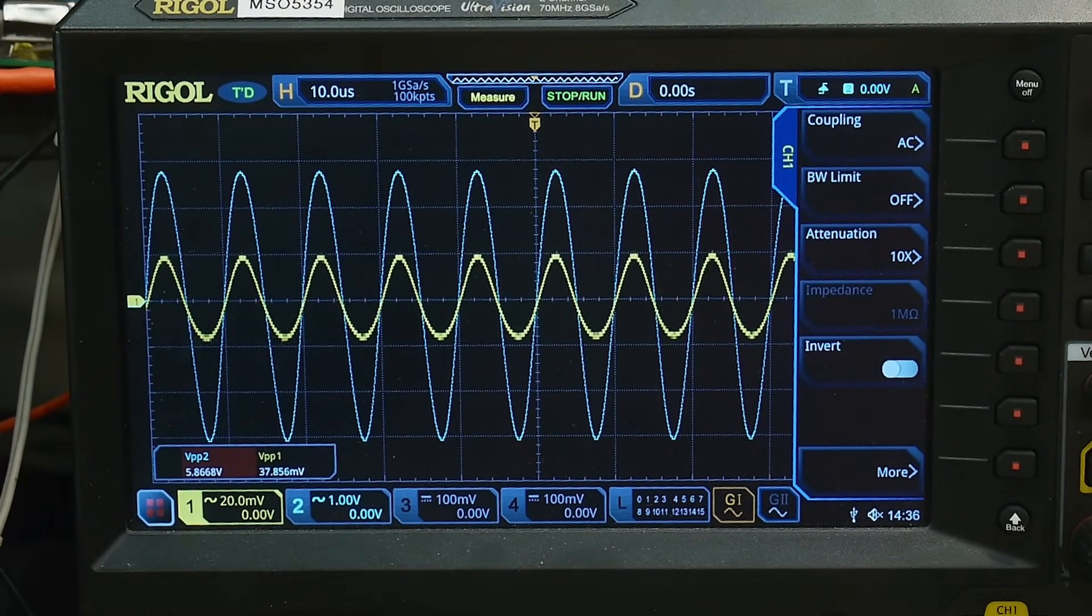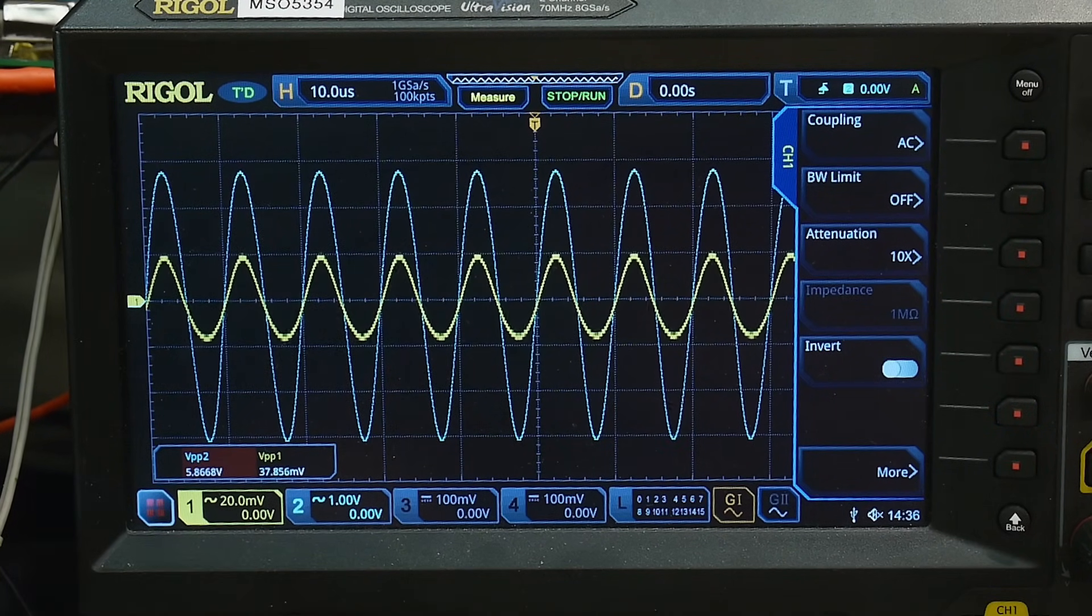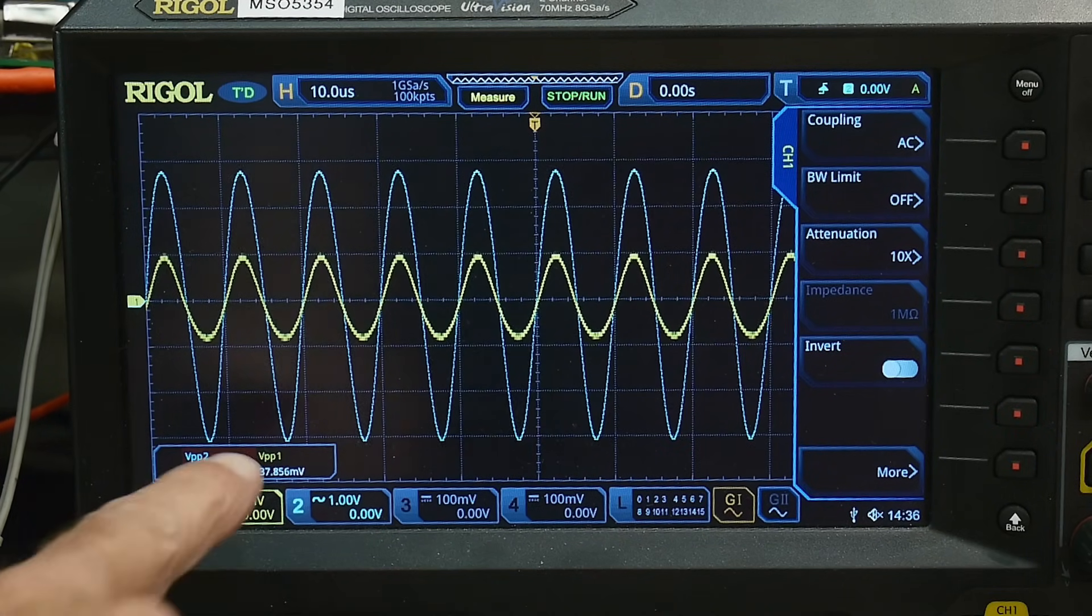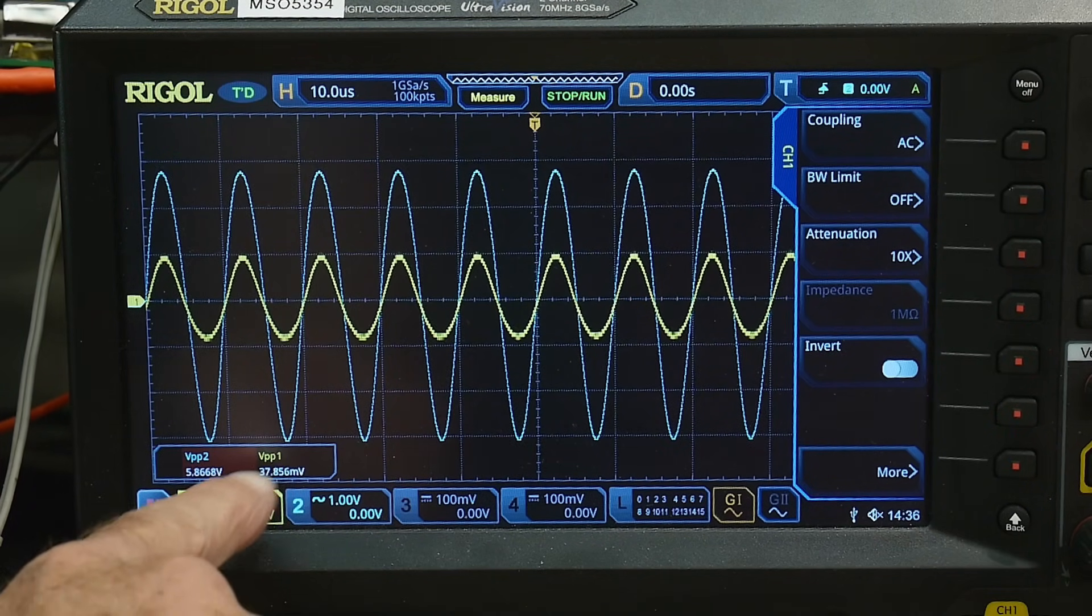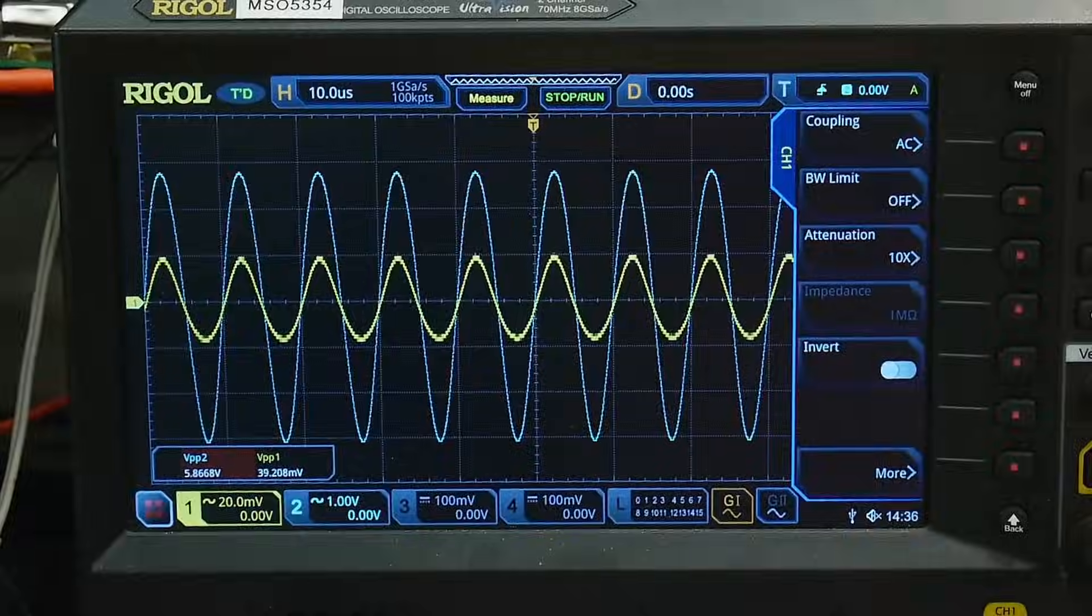The little is littler than you think because we're at 20 millivolts per division on the little. We have about 38 millivolts peak to peak. And the output we have about 5.9 volts.